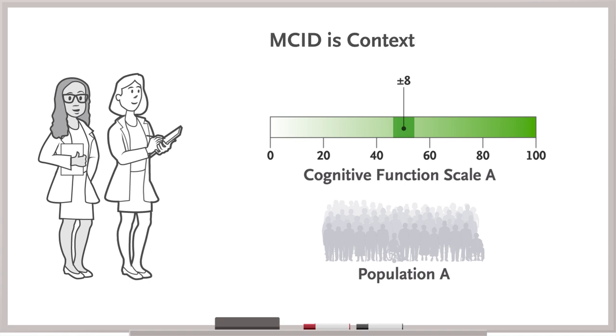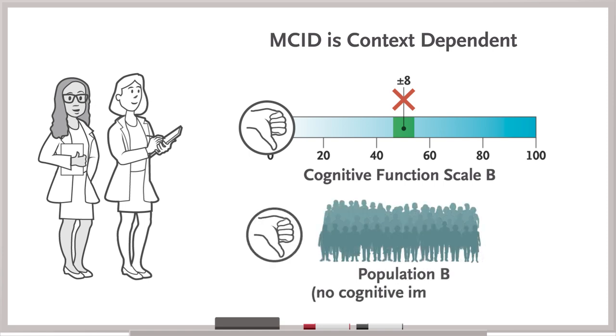Importantly, the MCID is context-dependent. That same eight-point difference might not apply to a related but different cognitive function scale, or to a different population, say of patients with no cognitive impairment at baseline.